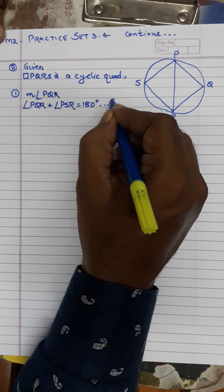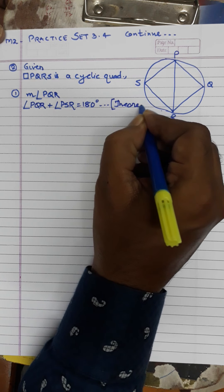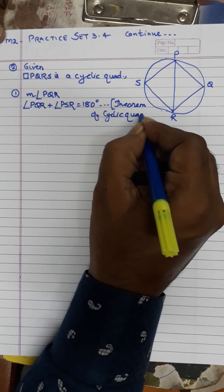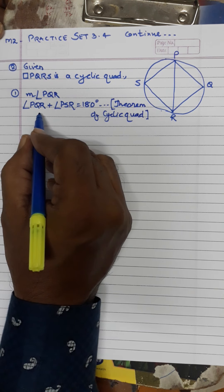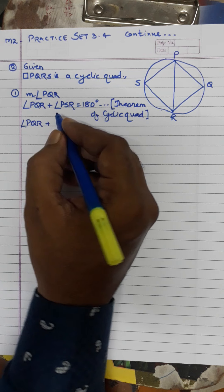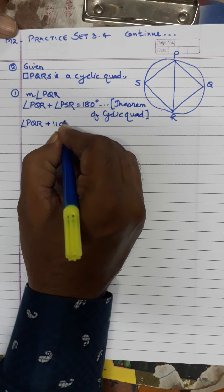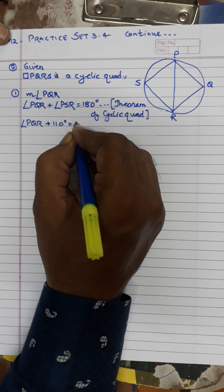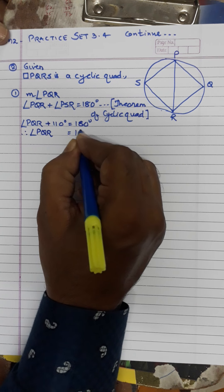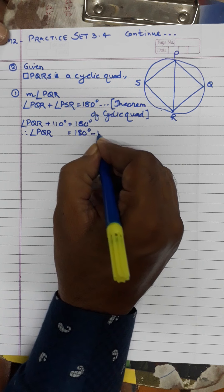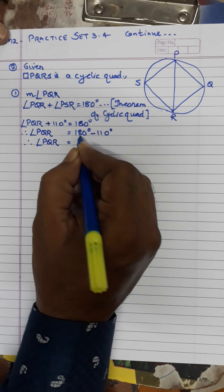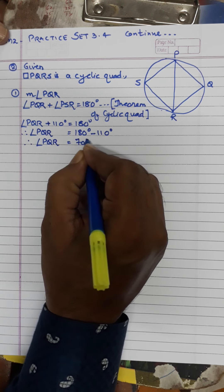The theorem says opposite angles are supplementary. So we write the reason: theorem of cyclic quadrilateral. Now angle PQR plus PSR — PSR is already given as 110 degrees — is equal to 180 degrees. Therefore angle PQR equals 180 minus 110, which is 70 degrees. So the first answer is 70 degrees.